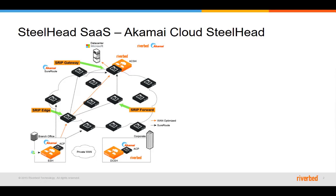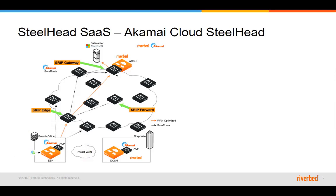As usual, with any Steelhead deployment we will need two Steelheads to optimize the traffic. In the branch office we have a regular Steelhead that should have been configured to optimize Steelhead SaaS traffic as explained in the user guide. And in the Cloud we have what we call an Akamai Cloud Steelhead, or ACSH.